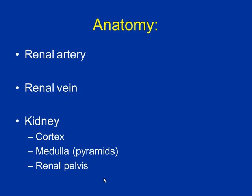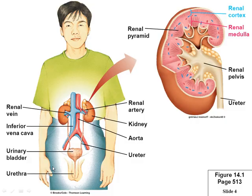Here's the anatomy overview. You should know these major parts. The renal artery carries blood in; the renal vein carries blood away. The cortex — cortex means bark, like bark of a tree — is the outside layer. The medulla is towards the middle, and the renal pelvis is where everything collects.